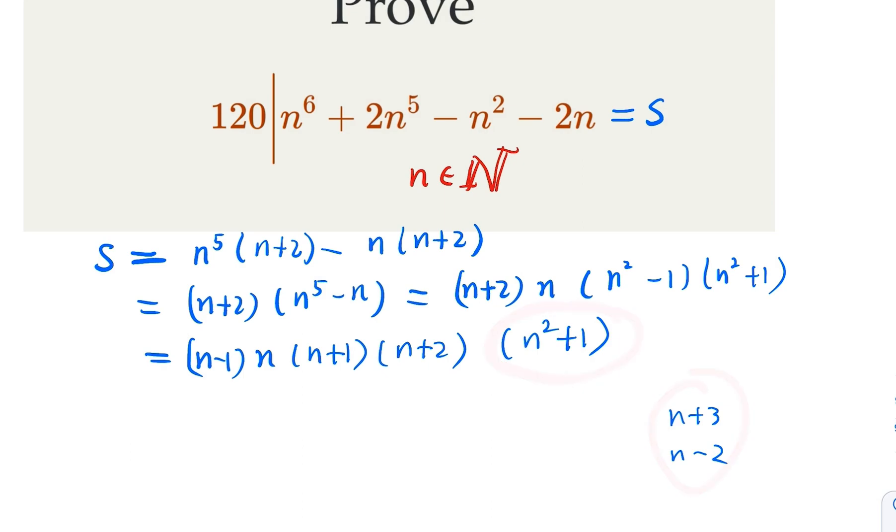Now how do we get the desired factor? The trick here is, for this term, we're going to rewrite it. We write it as n squared minus 4 plus 5. n squared minus 4, of course, can be factored as n minus 2 and n plus 2. Let's do that.